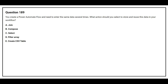Question number 189. You create a Power Automate flow and need to enter the same data several times. What action should you select to store and reuse this data in your workflow? Option A: Join. Option B: Compose. Option C: Select. Option D: Filter array. Option E: Create CSV table.